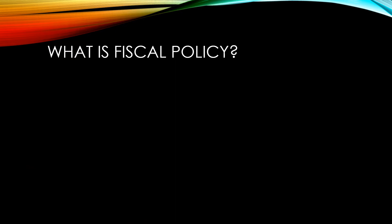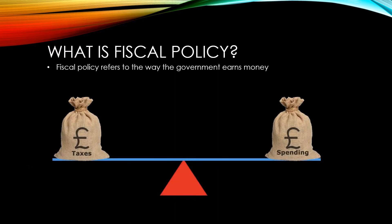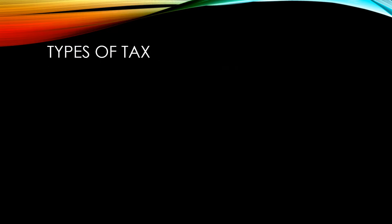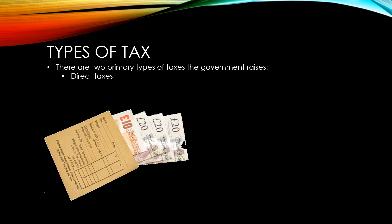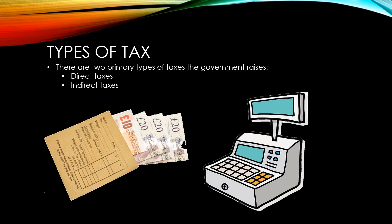Fiscal policy refers to all the choices the government makes over the way it earns money and the way it spends it. The taxes that the government raise can be split into two distinct types: direct taxes and indirect taxes. Let's take a look at each of these in a bit more detail.